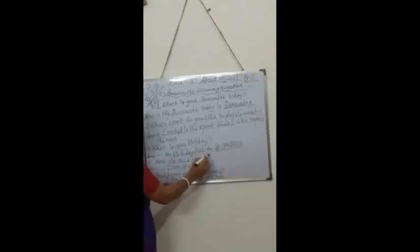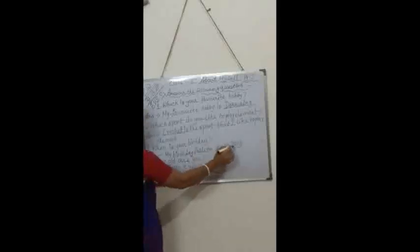Let me repeat again. Number 1: Which is your favorite hobby? My favorite hobby is drawing. Number 2: Which sport do you like to play the most? Cricket is the sport that I like to play the most. Number 3: When is your birthday? My birthday falls on 31st March 2013. Number 4: How old are you? I am 8 years old. At last, extra question — What do you want to become? I want to be a teacher.